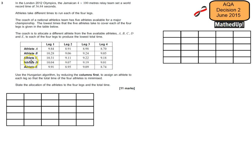So the first thing to notice here is that there are five athletes and only four legs. So one of the athletes is obviously going to miss out here. So in order to take this into account with our Hungarian algorithm, because it only works on a square matrix, we're going to have to have a dummy column here.